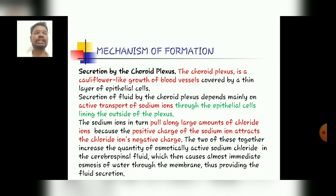Now a question arises: how is CSF secreted? The secretion is by the choroid plexus, which is a cauliflower-like growth of blood vessels covered by a thin layer of epithelial cells. The secretion of fluid by the choroid plexus mainly depends on the active transport of sodium ions through the epithelial cells lining the outside of the plexus.